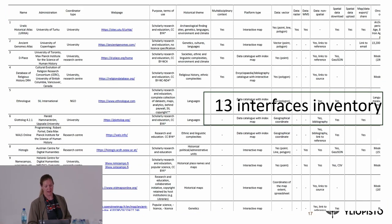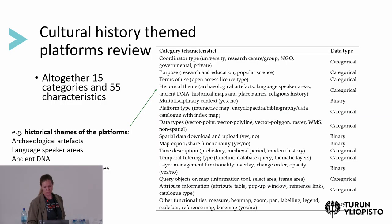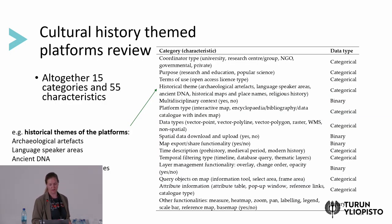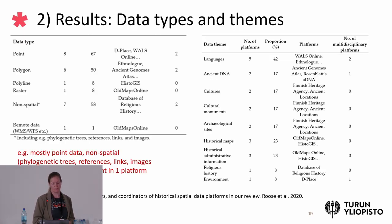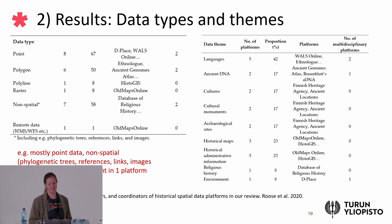You can see the table — if you are interested in finding all kinds of different historical platforms yourself, you can find it in our published article. About the themes: the context and filtering types are described in our article as well. These are the results of the data types used: point polygons, polylines very rarely, raster very rarely. And non-spatial data, which you can see is a very important part — it contains phylogenetic trees, some reference links. So very much of the information is not actually spatial data.